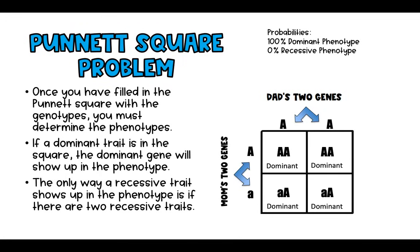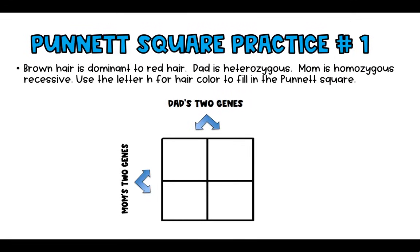Each square represents 25%, because 100% divided by four squares equals 25% each. We can add those up — four times 25 is 100%. The ratio tells us the relation of the numbers and the outcome. We write it as 4:0 in this example, because all four squares showed the dominant outcome and zero squares showed a recessive outcome.